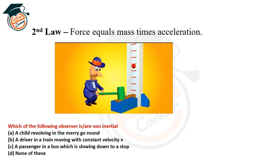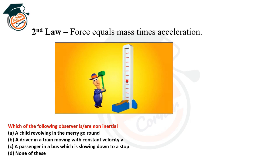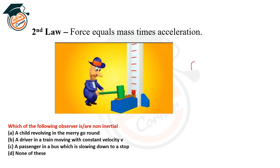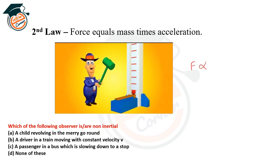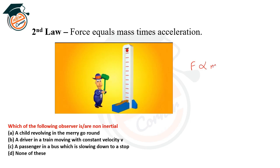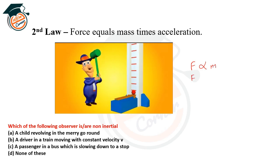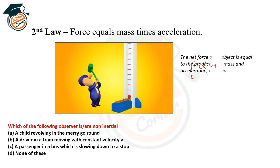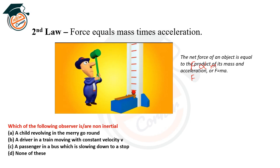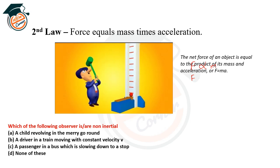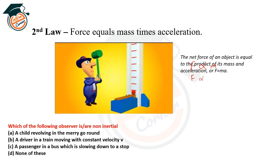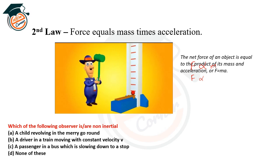Newton's second law states that force equals mass times acceleration. The mathematical representation is: the net force on an object equals the product of its mass and acceleration. Force is directly proportional to mass, and force is also directly proportional to acceleration: F = ma.